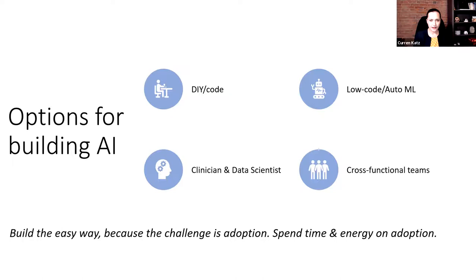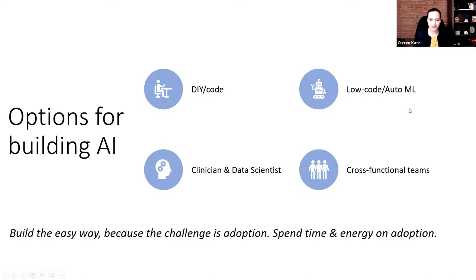In most cases, to produce AI that is a product — something that can be operationalized, impact outcomes, and be used on a wide scale — you're going to want to work with a data scientist, usually one or two. Ideally, if you're at an organization with developed infrastructure and resources, a cross-functional team: data scientists, data engineers, ML engineers, application developers, and people with expertise in user interface or integration into Epic. That is a great thing to have — it usually implies a very sophisticated organization.